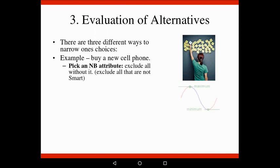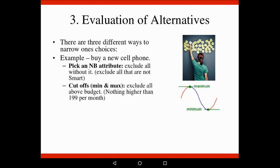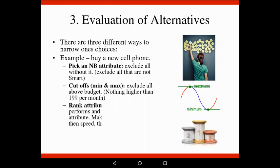Then there's one called cutoffs - minimum and maximum price. You'll say your budget is only 199 rand per month for a cell phone, and anything over that you can't afford, so you're only going to look at phones that are 199 rand a month or lower.